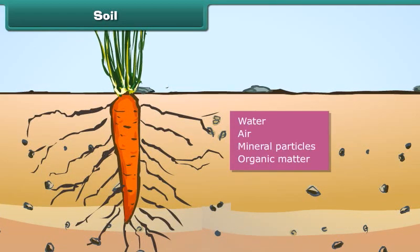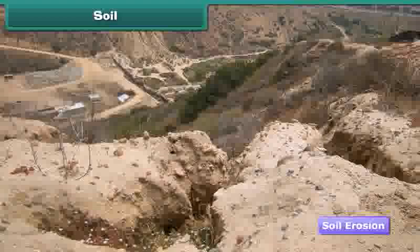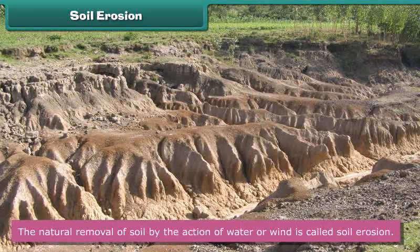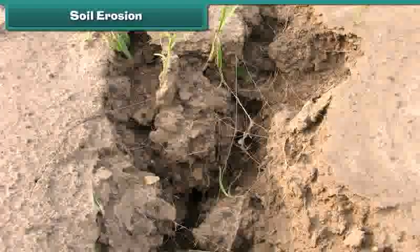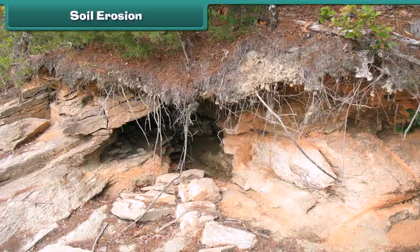Soil serves as a natural medium for growth of plants. Most soils contain four basic components: water, air, mineral particles, and organic matter. But the fertility of soil has decreased significantly, mainly because of soil erosion. The natural removal of soil by the action of water or wind is called soil erosion. The disappearance of the topmost surface and large ditches in the ground are signs of soil erosion.